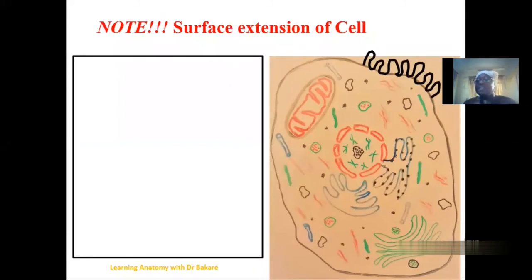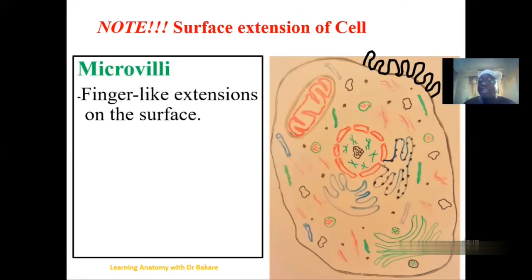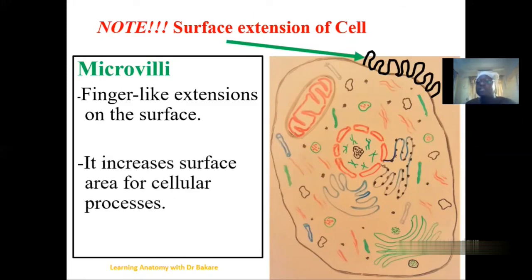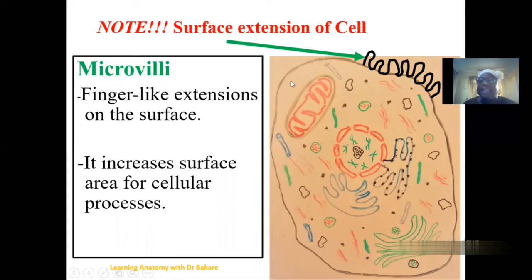The cell surface has also been transformed into a number of structures that enhance function. The first is the microvilli — finger-like extensions seen on the surface of the cell. What they do is increase the surface area for the activities this cell performs. Whether the cell is involved in secretion or absorption, the microvilli help to increase the rate at which they secrete or absorb substances, because these folded projections present a longer surface length than a plain region.